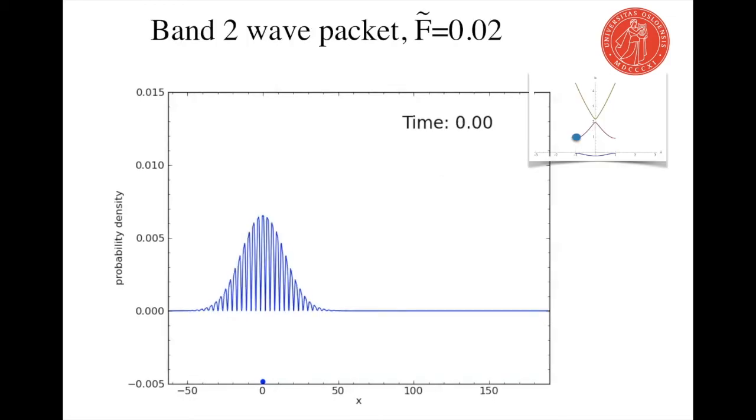We can also make a wave packet out of Mathieu functions in the second band. It looks a bit different but it's still localized. Let's see how it evolves in time.